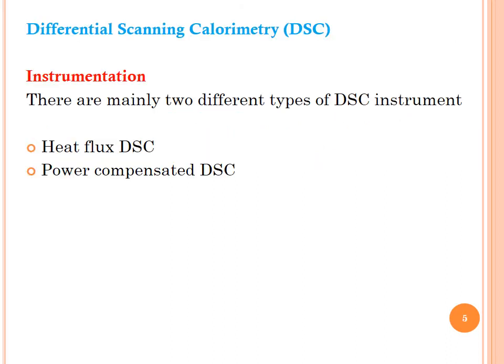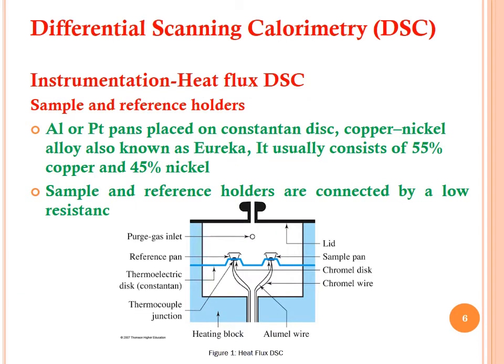Let's discuss the instrumentation of DSC. There are mainly two different types of DSC instruments: heat flux DSC and power compensated DSC. In the heat flux DSC, the components include sample and reference holders — aluminium pans placed on a constantan disk. Constantan is a copper-nickel alloy, also known as Eureka, consisting of 55% copper and 45% nickel. Sample and reference holders are connected to a low resistance.